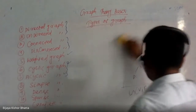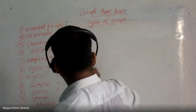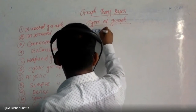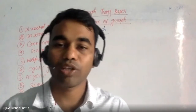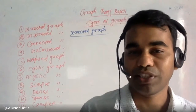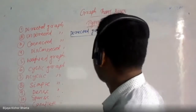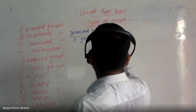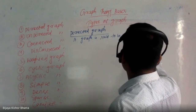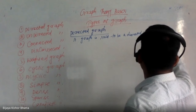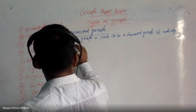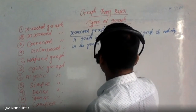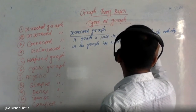Let's start from the beginning and write down the definitions step by step. Starting with the directed graph — a graph is said to be a directed graph if each edge in the graph has a direction associated with it.